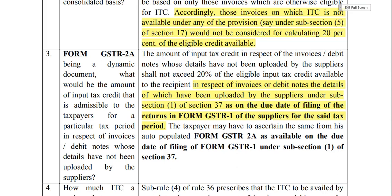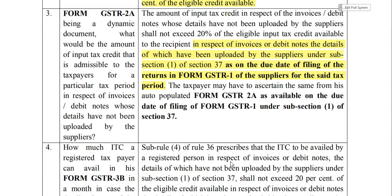The purpose of the government here is to prevent tax evasion and to encourage suppliers to file GSTR-1 on time. If a supplier does not file GSTR-1 on time to avoid late fees, the recipient will not get the 20% extra benefit. So this rule makes timely filing of GSTR-1 very important. The reference date for GSTR-2A is the due date of GSTR-1 of the supplier.